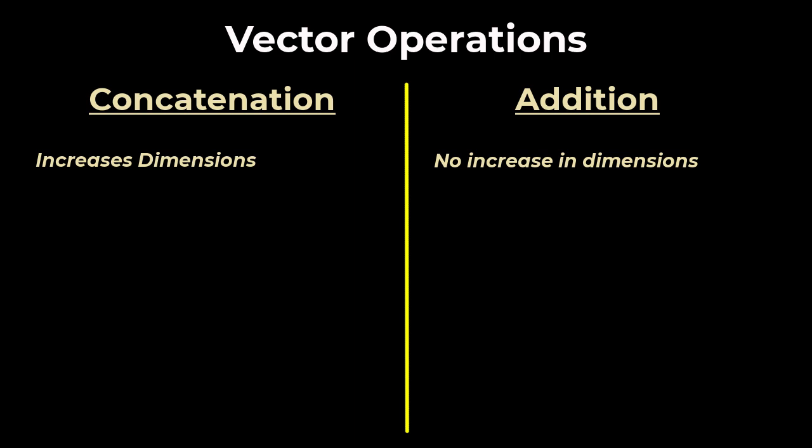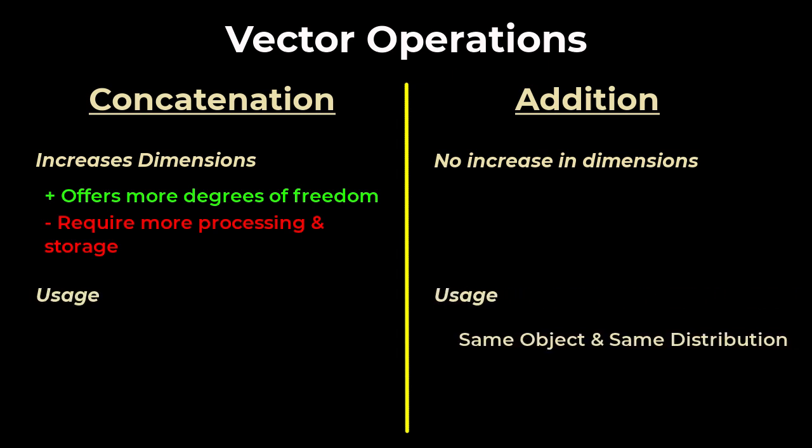On one hand, this means that concatenation offers more degrees of freedom for the vector to better represent the meaning of the word. But on the other hand, it means the model needs to work with more processing and storing parameters. From what I have read, we can add two vectors if they represent the same object and are drawn from the same distribution, or they represent different objects and are drawn from different distributions.